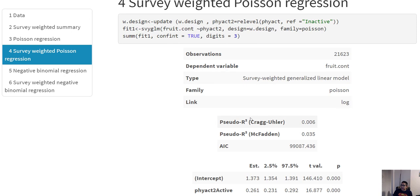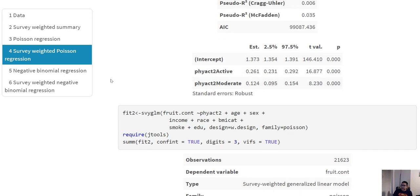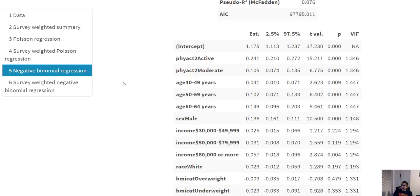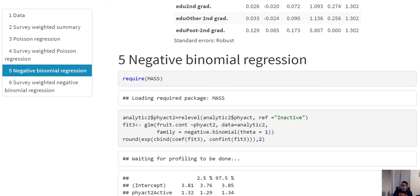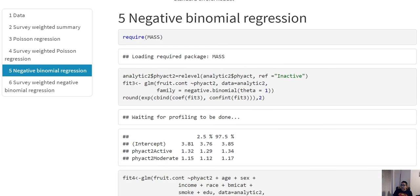So next up, the negative binomial regression. In the negative binomial regression, again we are using glm, but we have to use the negative binomial family and also have to specify the theta parameter, and that will give us the estimates.